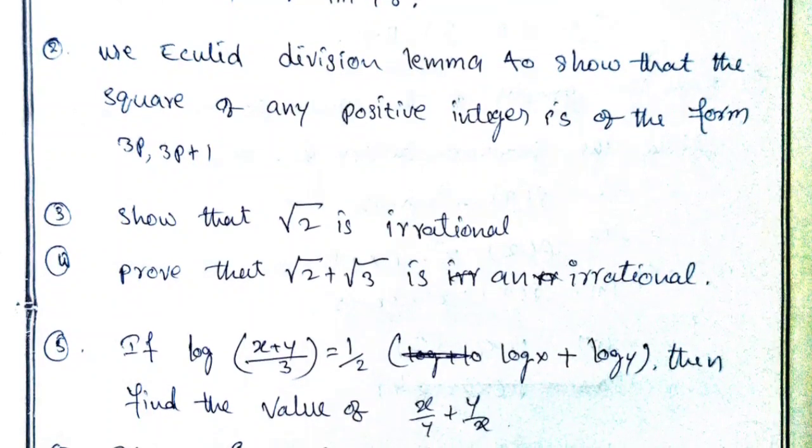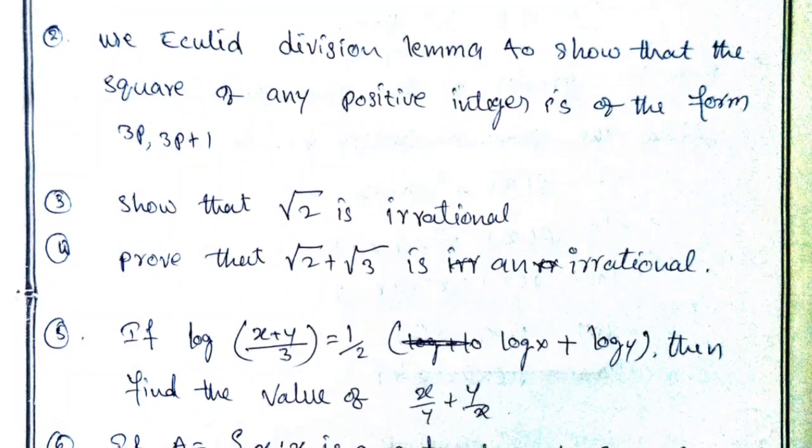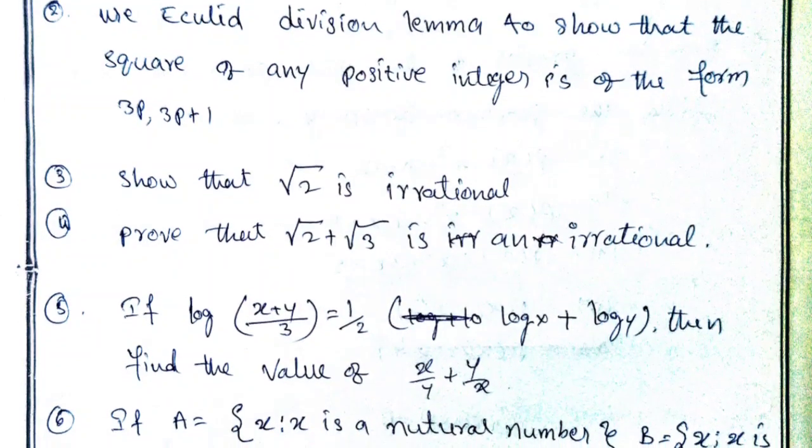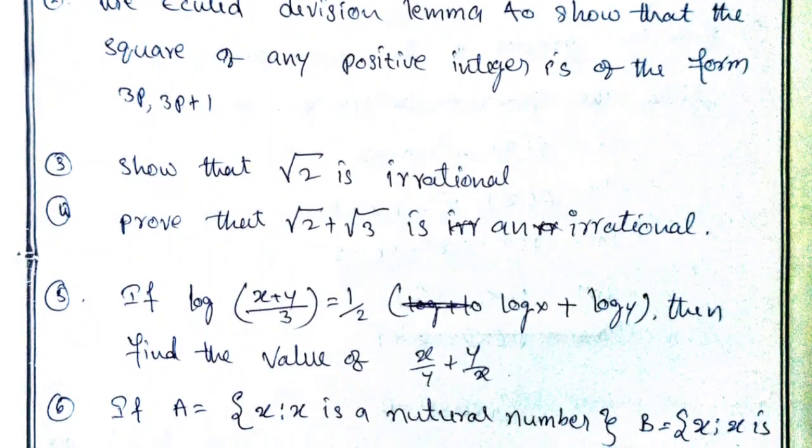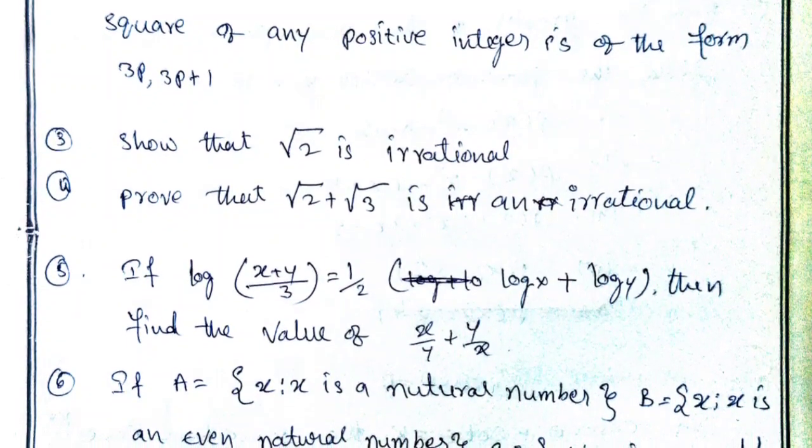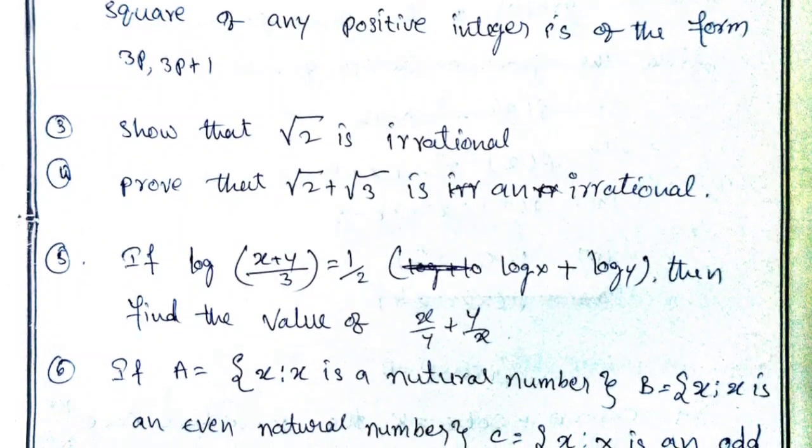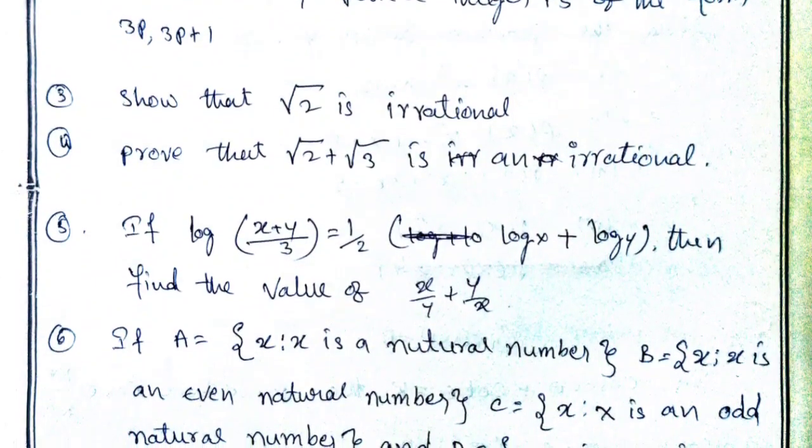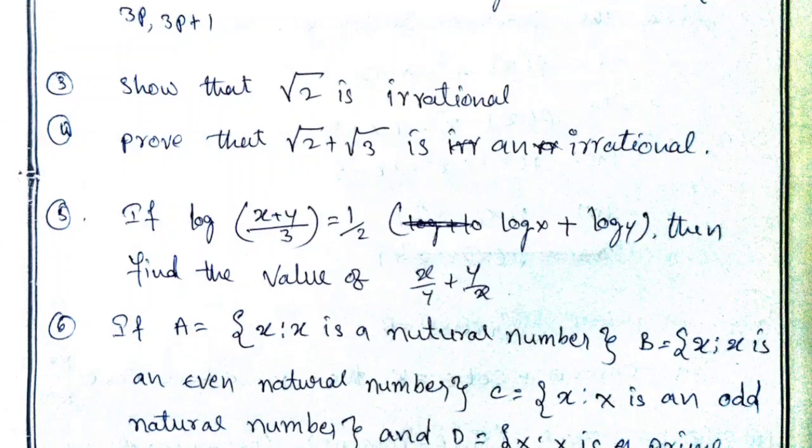Next you have logarithms in the 8 marks question. Two questions from logarithms. Then sets in two more questions. A, B, intersection, minus, union. A-C, A-D, C-B, B-D.